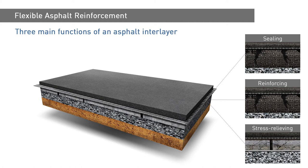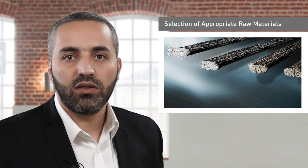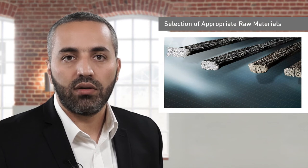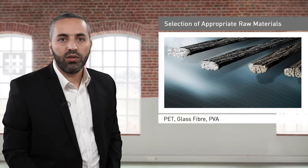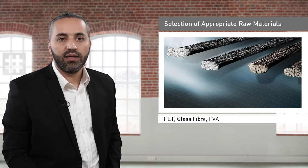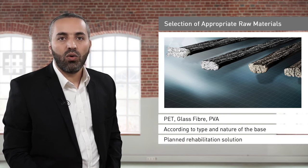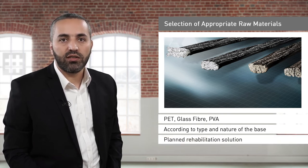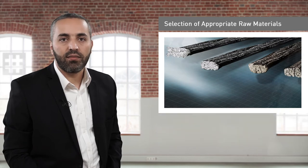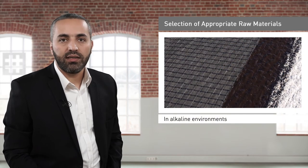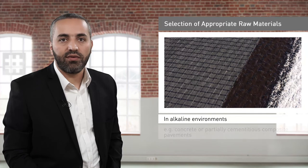A wide range of applications exists and each of these requires the selection of appropriate raw materials. Asphalt reinforcement products made from polyester, glass fibre or polyvinyl alcohol (PVA) are available and are selected according to the type and nature of the base and the planned rehabilitation solution. Particularly for applications in alkaline environments, specification of the correct raw material is essential.